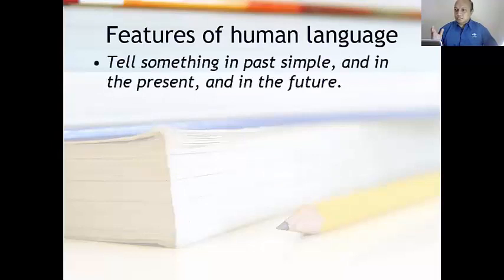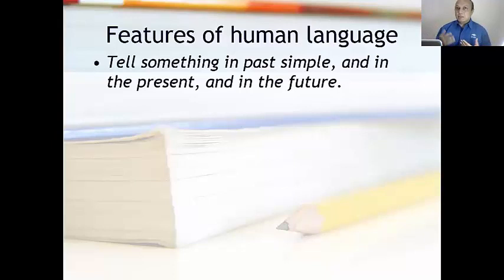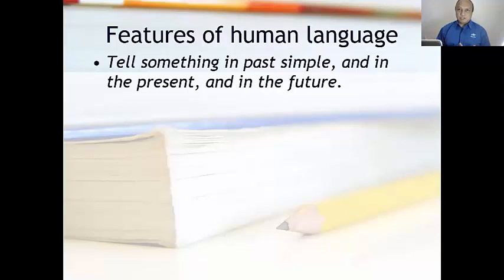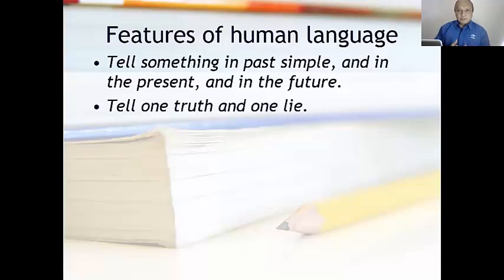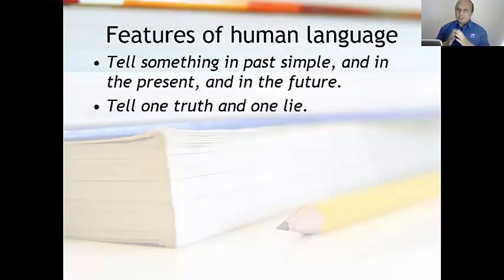Now, features of human language — can you think of something in the past simple, something that happened in the past, and something that happened in the present, and something that will happen in the future? Also, you can try to tell me a truth and a lie. For example, you may say, "I dreamed about aliens last night." That can be the truth, or you can be telling me a lie.